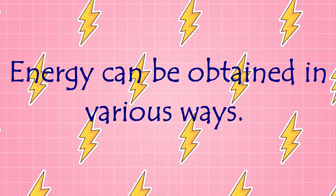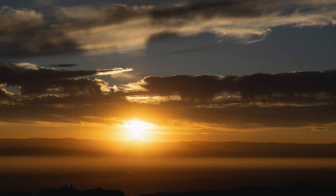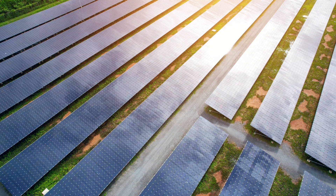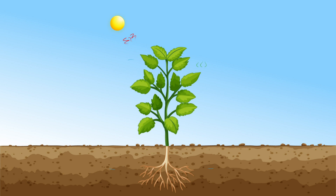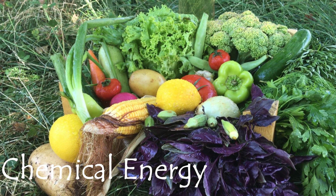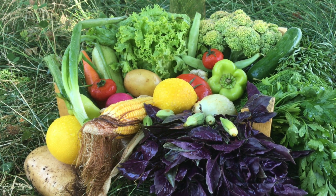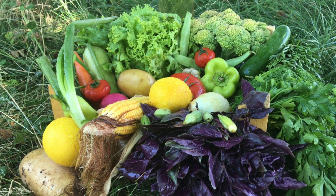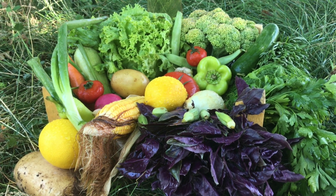Energy can be obtained in various ways. From the sun: the sun provides radiant energy that can be captured by solar panels and converted into electrical energy. Plants also use sunlight to create chemical energy through photosynthesis. From food: humans and animals obtain chemical energy by eating food. Our bodies convert this chemical energy into kinetic energy for movement and thermal energy to maintain body temperature.